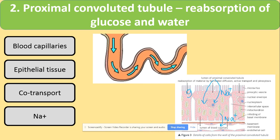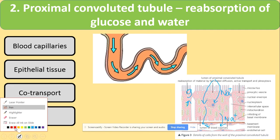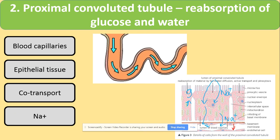Now we have a high concentration of glucose in the epithelial cell thanks to co-transport. Since there is a higher concentration of glucose here than in the blood, glucose is transported to the blood capillary by facilitated diffusion. With lots of glucose and sodium ions now in the blood capillary, the water potential in the capillary is lower than in the epithelial cell of the PCT, so osmosis of water takes place from the PCT epithelial cell to the capillaries.